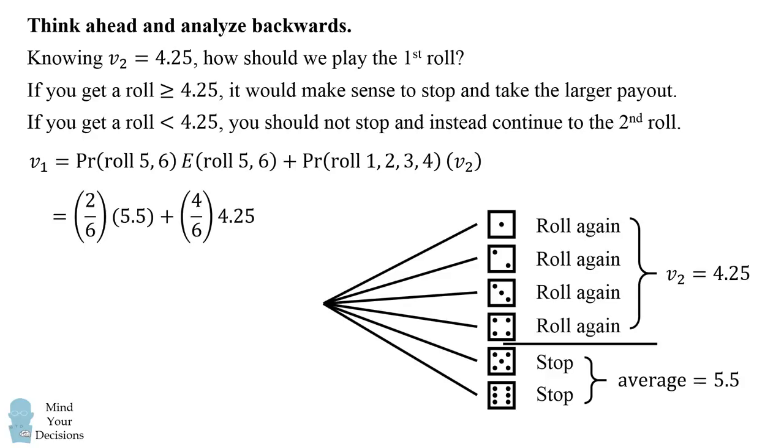2 sixths or 1 third of the time, we'll get an average payout of 5.5. And 4 sixths or 2 thirds of the time, we'll get an average payout of 4.25. Adding those, we get a result of 14 over 3, which equals 4.6 repeating. And that's the value to this game from the first roll.